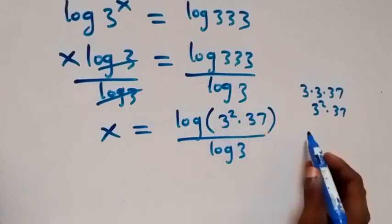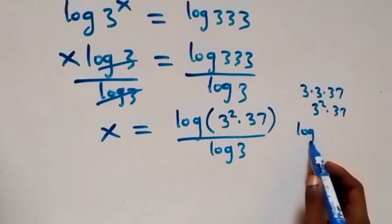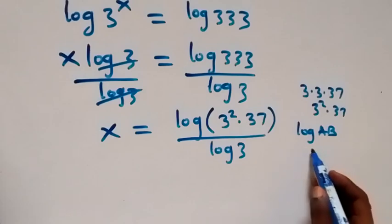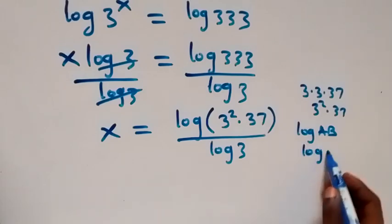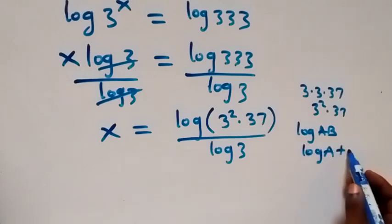Then from the log of log reading, when we have log a times b, log ab, we can separate it as log a plus log b.